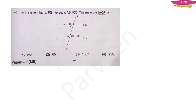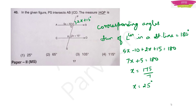In the given figure, PS intersects AB which is parallel to CD. Using corresponding angles, angle PCB equals angle QRD = 2x + 15°. Since angles on a straight line sum to 180°, adding 5x − 10 and 2x + 15 and solving gives x = 25°. Option 1 is the right answer.